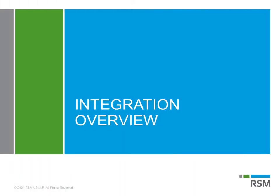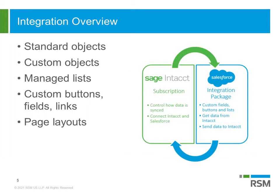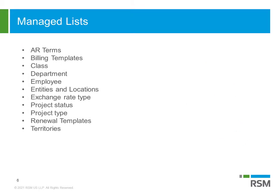Let's take a quick look at the Sage Intacct advanced CRM connector before we jump in and start syncing over information. The advanced CRM integration consists of both a Sage Intacct application and the Salesforce AppExchange managed package that work seamlessly together. Basic setup, field mapping, and sync directions are managed in Sage Intacct, while custom fields, buttons, and related lists are available in Salesforce to be added to page layouts so users can start syncing information over quickly and easily. The managed lists make it easy to have information from Sage Intacct sync over to Salesforce, which can then be referenced on Salesforce records.